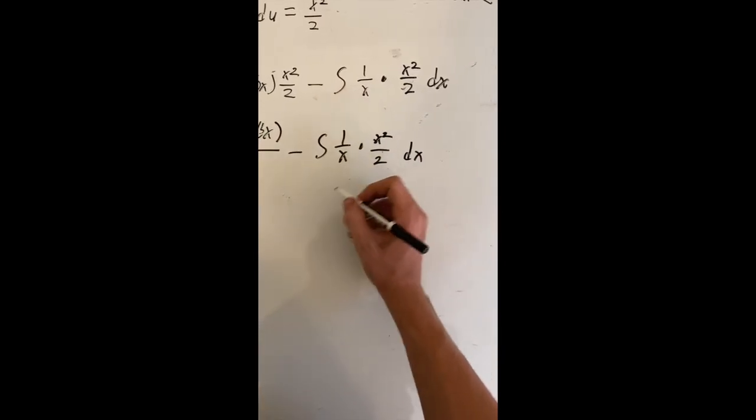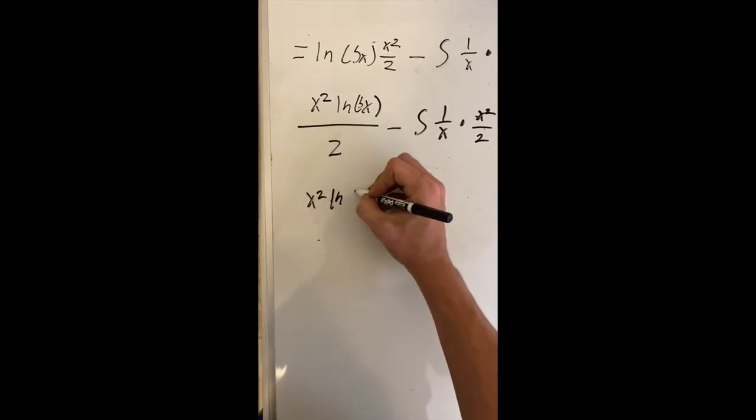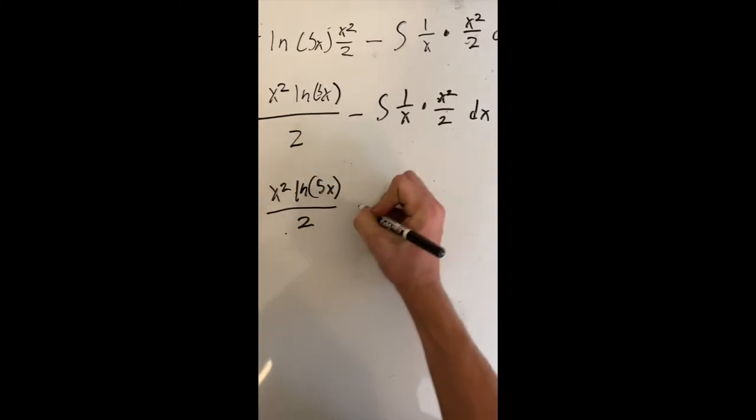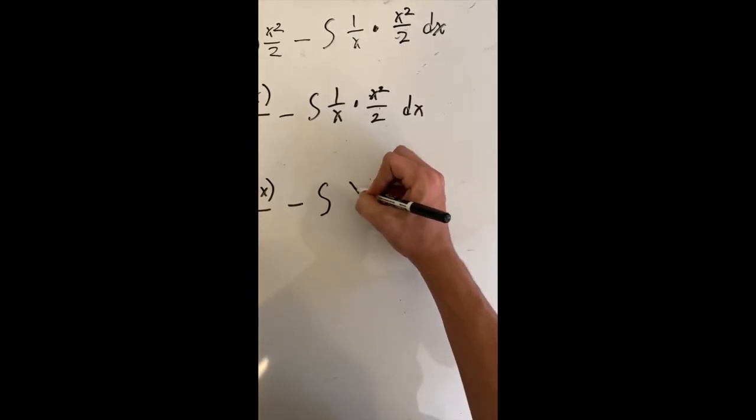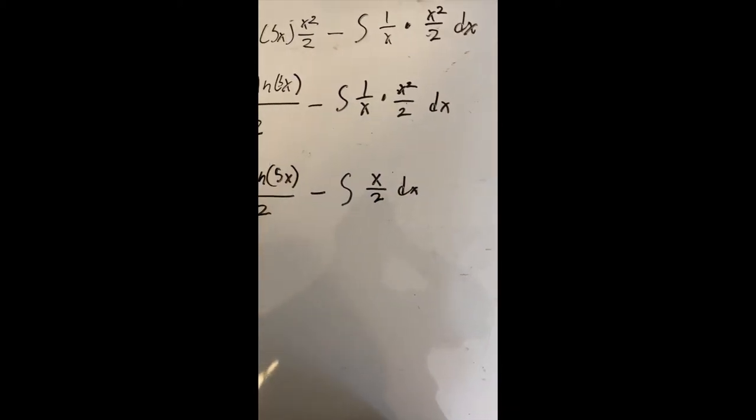Now I want to simplify this. I'm going to multiply these together. So I'm going to first bring this down. And 5x divided by 2. So I'm going to subtract the integral of x divided by 2 dx.